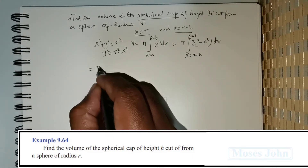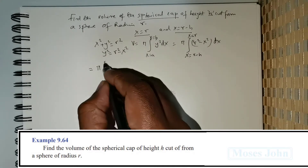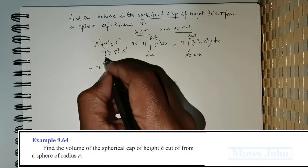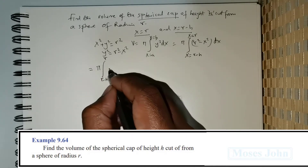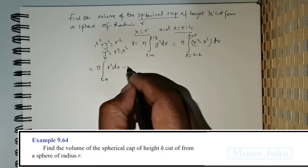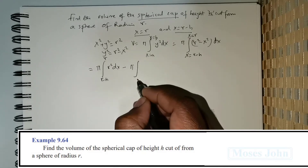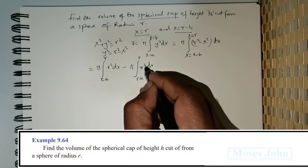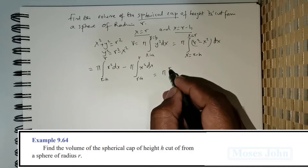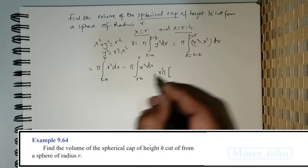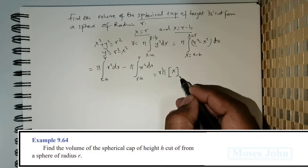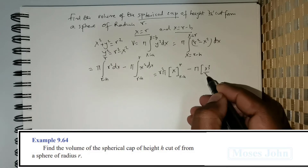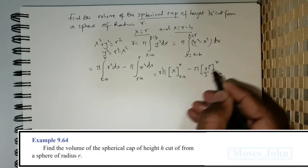This simplifies as follows: π times the integral from r − h to r of r² dx, plus π times the integral from r − h to r of x² dx. Upon integrating, since r² is a constant we get π·r²·x evaluated from r − h to r, followed by π · x³/3 evaluated from r − h to r.